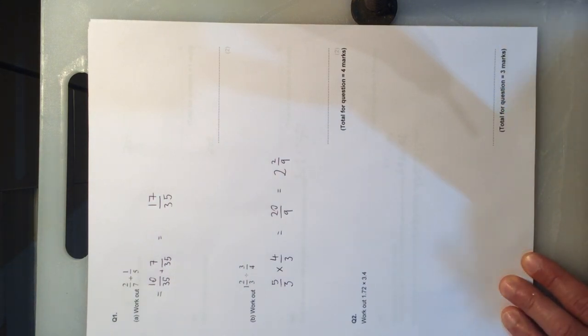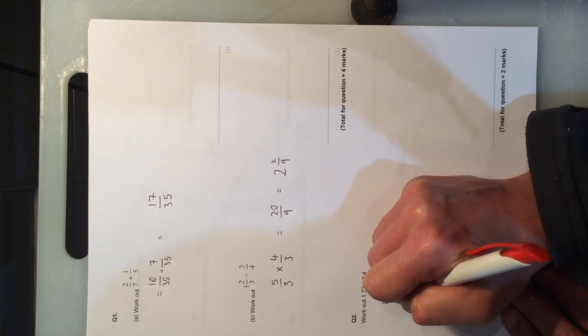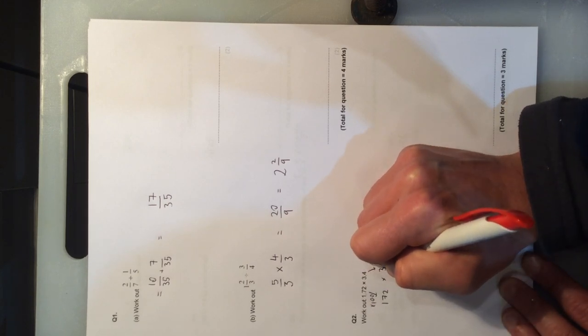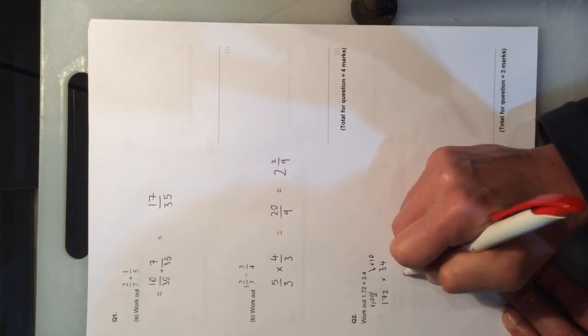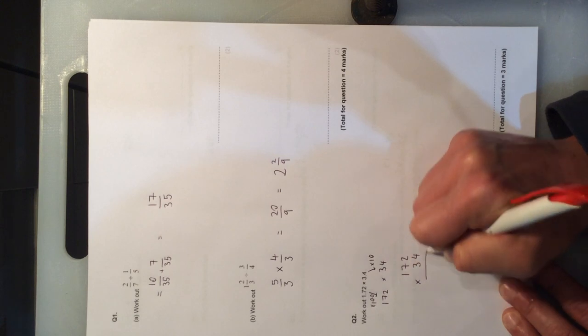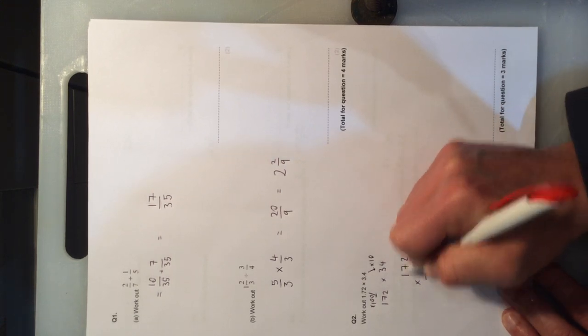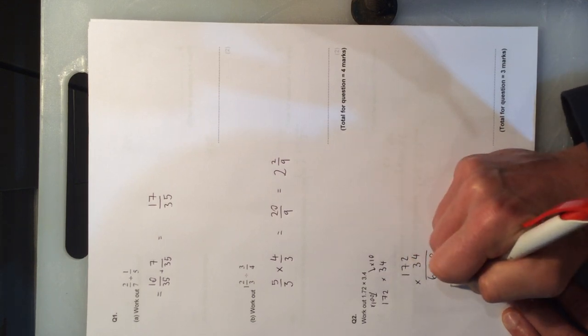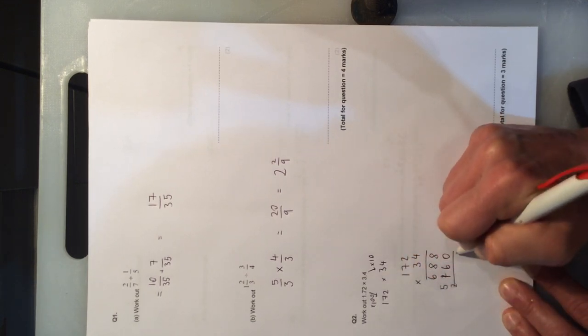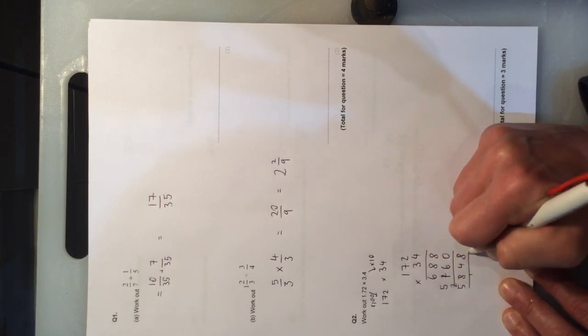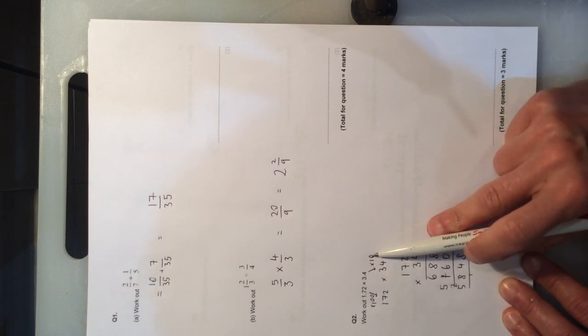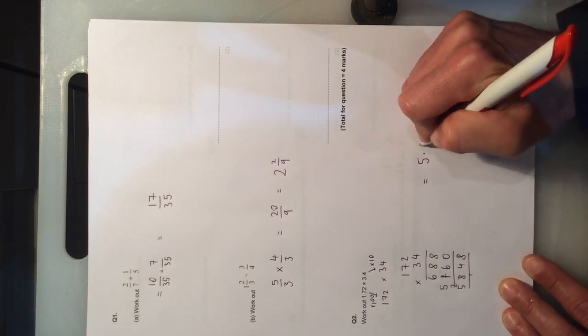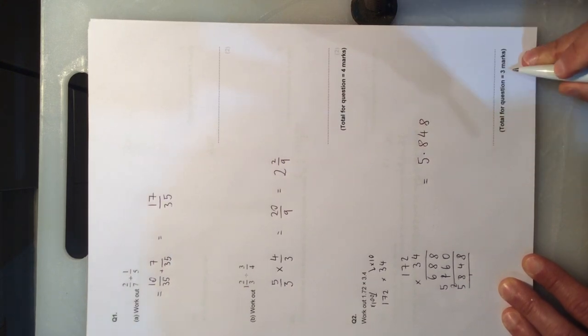Question 2 is about multiplying decimals. The first thing I'm going to do is turn them both into integers. I've multiplied this number by 100 and this number here by 10. Then it becomes a multiplication sum. When you add them back together again, you get 5, 8, 4, 8. However, because we've multiplied by 100 and 10, that's the same as multiplying by 1,000, we're now going to divide this number by 1,000. 5.848 would give me the full 3 marks for this question.